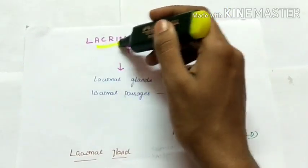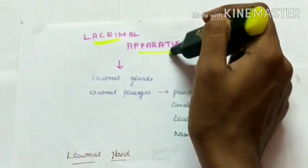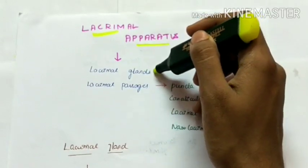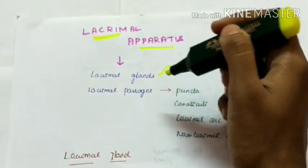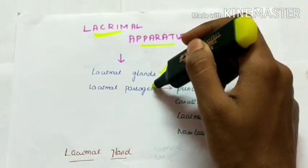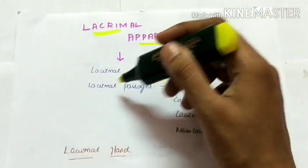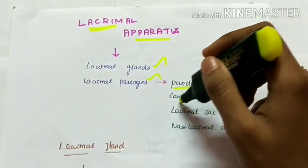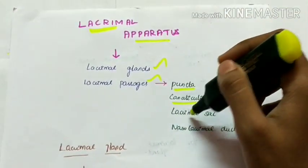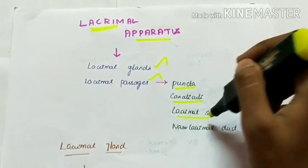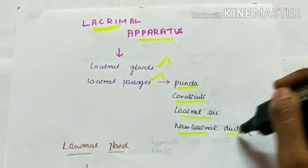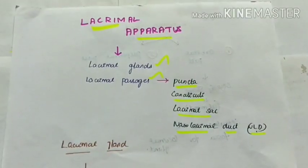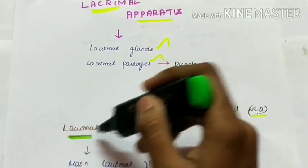The lacrimal apparatus consists of the lacrimal glands and the lacrimal passages. These lacrimal passages are made up of puncta, canaliculi, lacrimal sac, and nasolacrimal duct, called NLD.